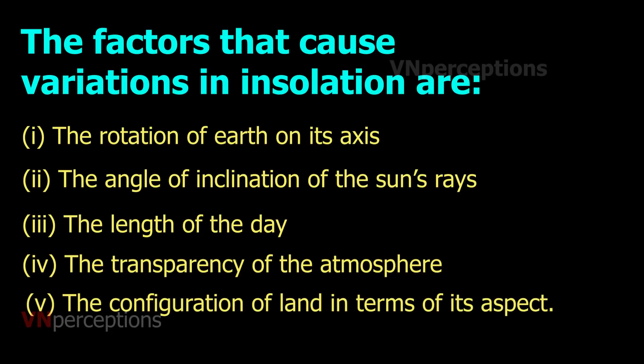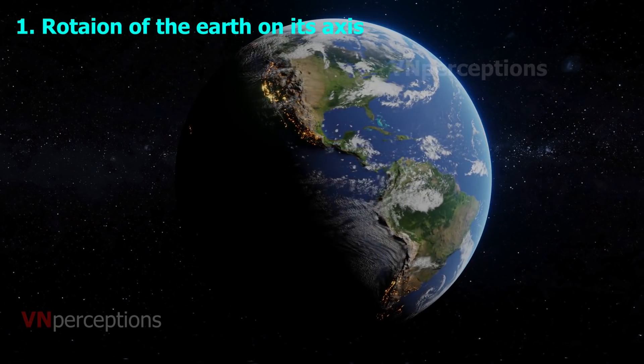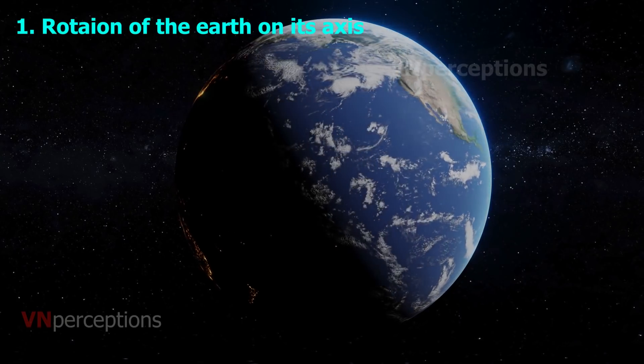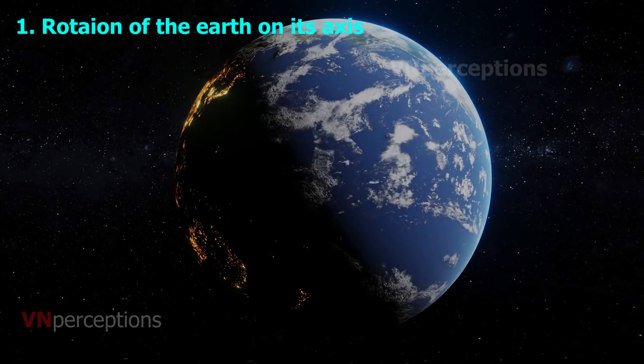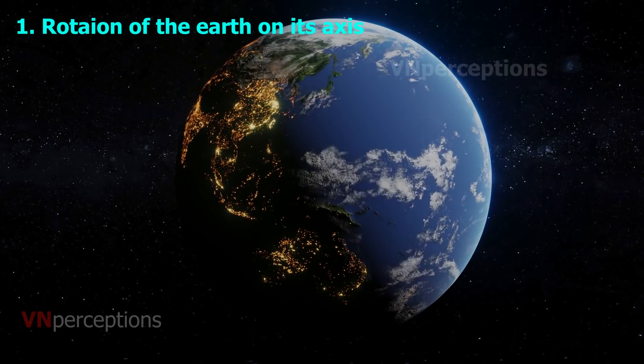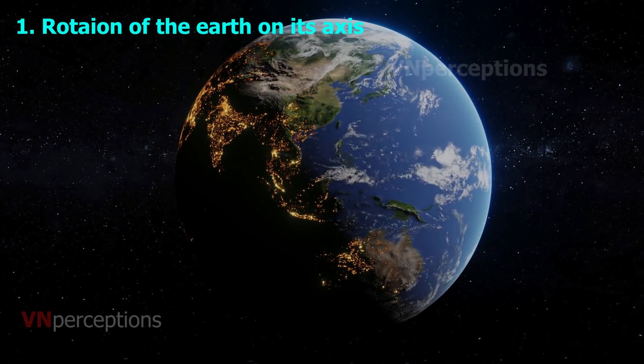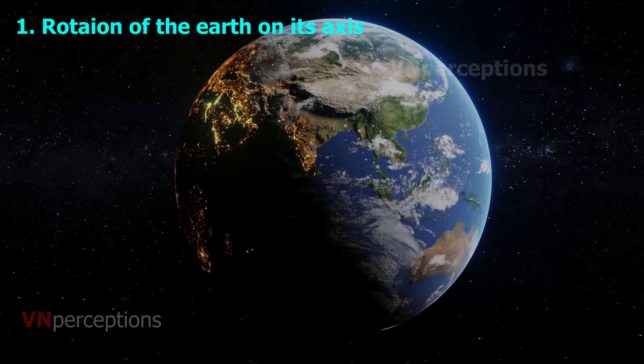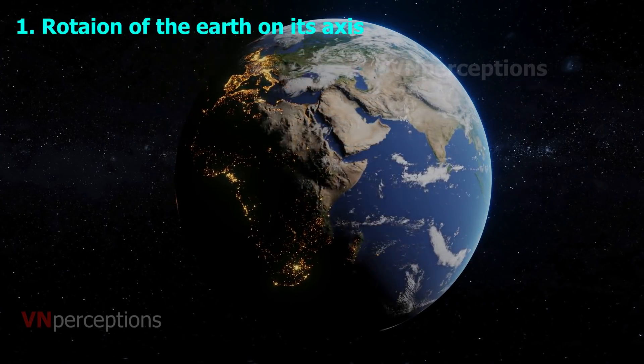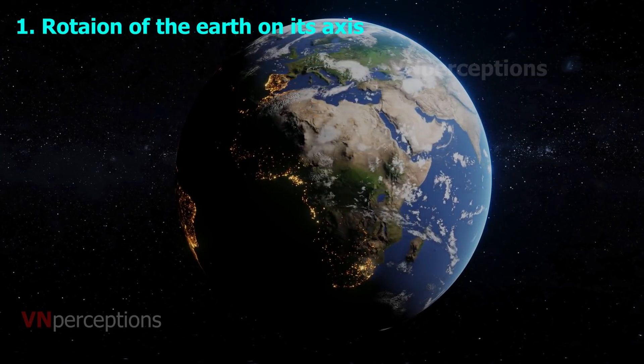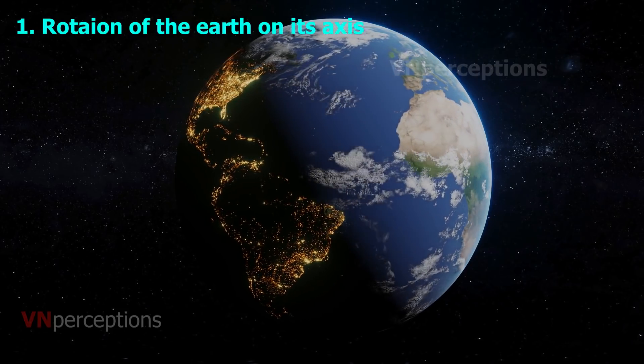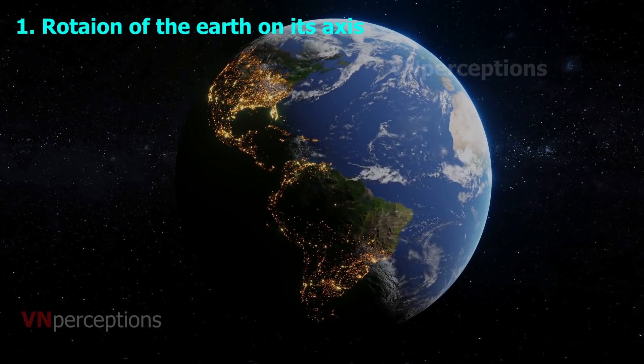Because of the rotation of the earth, in some parts it is day and in another part it is night. The earth is continuously rotating, completing one rotation in nearly 24 hours. In different parts of the earth, the weather conditions and time of day are different, so there is variation in insolation.